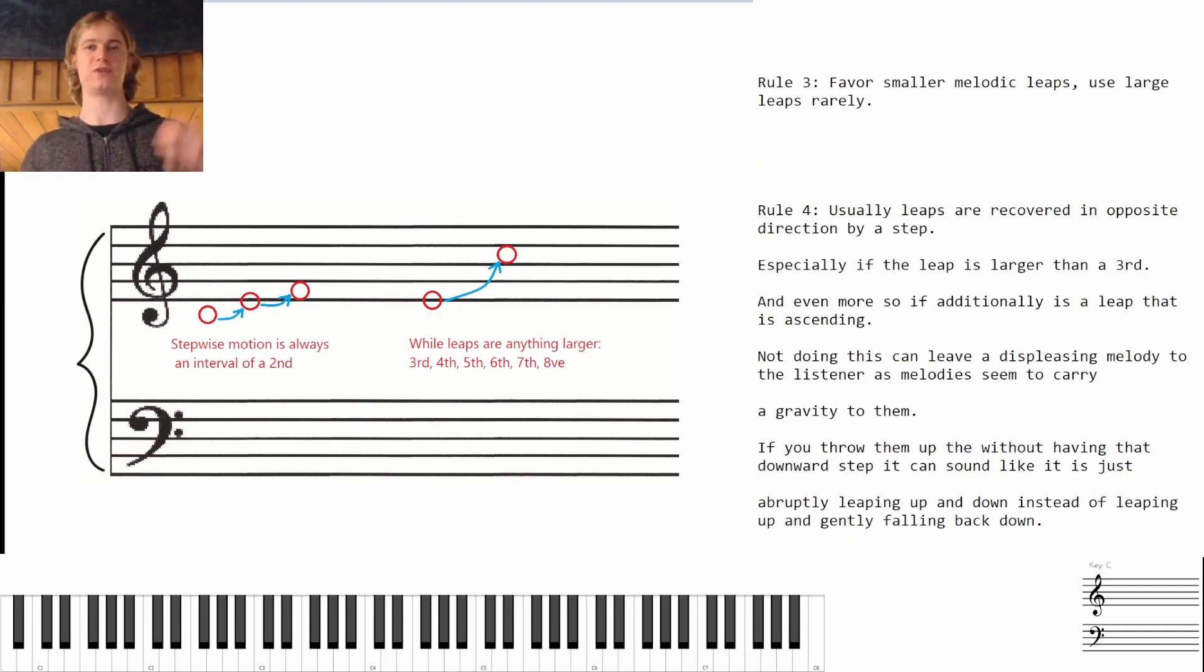Rule number three: favor smaller melodic leaps. Use large leaps fairly rarely. These are going to have a tendency to stick out a lot more to the listener and create a sort of bump in the melody, which can be a good thing but you can always have too much of a good thing.